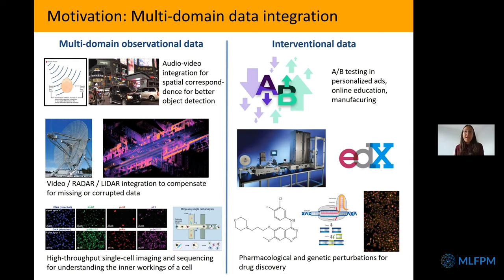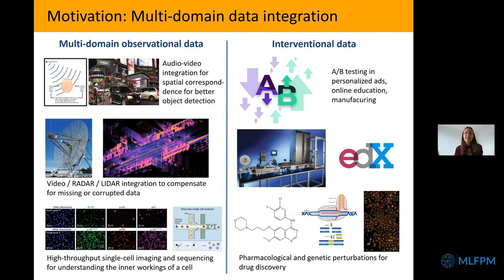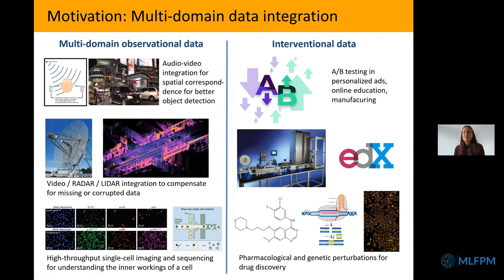Often you have a drug screen looking at many different cell types, and then a disease like COVID-19 comes along which affects particular cell types. The question is: can you infer from drug screens already performed on some cell types what those drugs would do on a different diseased cell type that you haven't yet measured? Similar questions arise in many other areas where you can perform interventional experiments — A/B testing in advertising, personalized ads, online education, or manufacturing.